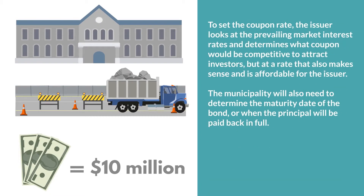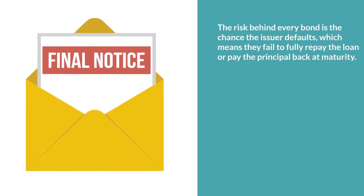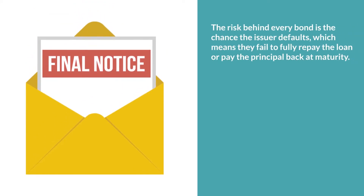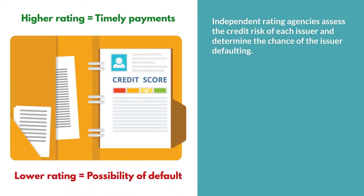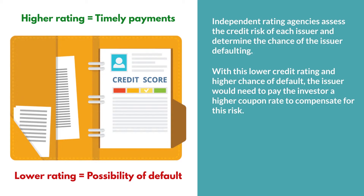To set the coupon rate, the issuer looks at the prevailing market interest rates and determines what coupon would be competitive to attract investors, but at a rate that also makes sense and is affordable for the issuer. The municipality will also determine the maturity date of the bond, or when the principal will be paid back in full. The risk behind every bond is the chance that the issuer defaults, which means that they fail to fully repay the loan or pay the principal back at maturity. Independent rating agencies assess the credit risk of each issuer and determine the chance of the issuer defaulting. A higher credit rating means chances are better that the issuer will make timely payments. A lower credit rating typically means that the chances are greater that the issuer will not make timely payments and could default. With this lower credit rating and higher chance of default, the issuer will need to pay the investor a higher coupon rate to compensate for this risk.